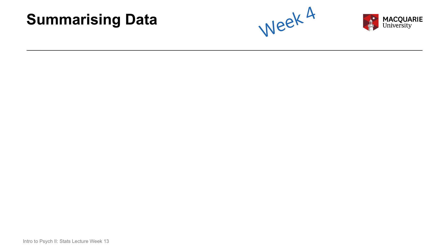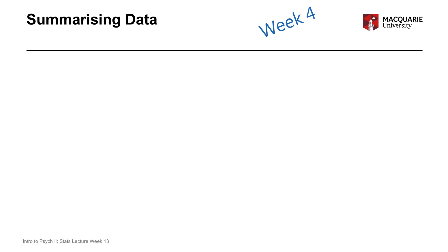In week four, we started talking about summarizing data — how to communicate information collected as data in an efficient, condensed way, rather than communicating every single score for every person. Summarizing data can come in two forms: graphical or numeric summaries. It also varies in terms of how many variables are involved: univariate summaries look at a single variable at a time, while bivariate summaries look at two variables at a time. We had both kinds of summaries throughout the term.